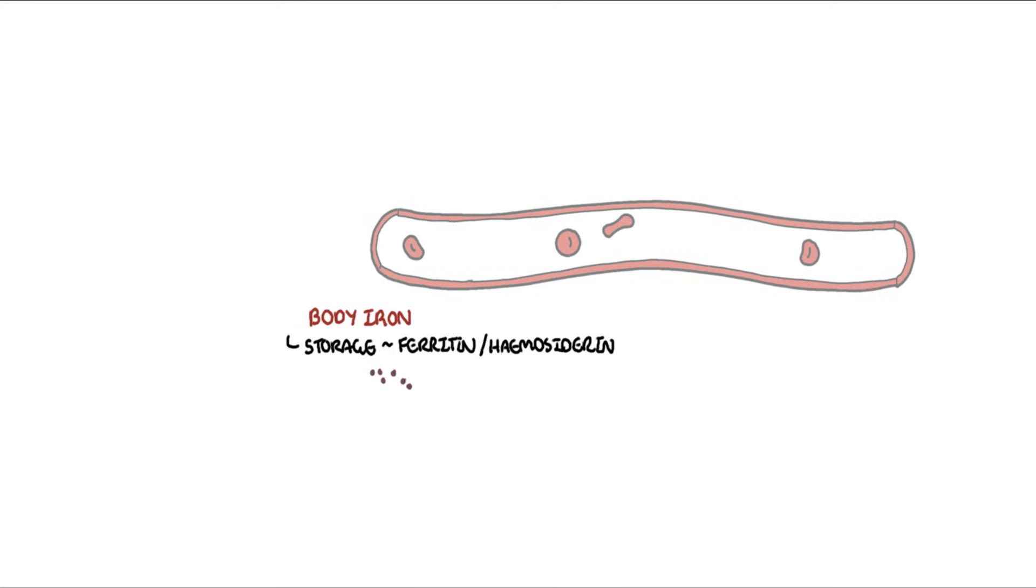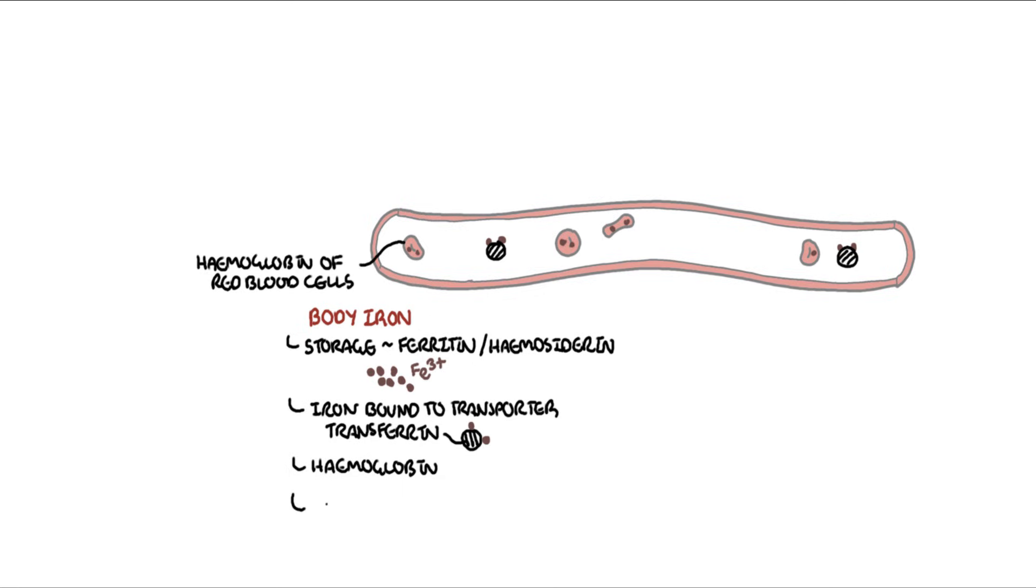You can also find iron bound to transferrin, which is the transportation of iron in the plasma. Finally, you can find iron in hemoglobin, where the majority of it is found. Hemoglobin is important because it carries oxygen around our body. Iron can also be found in other proteins and enzymes.